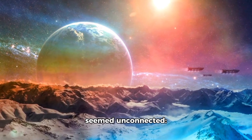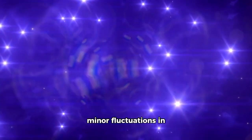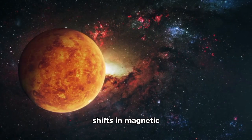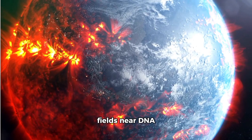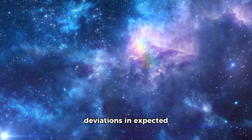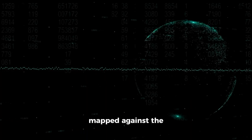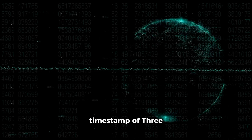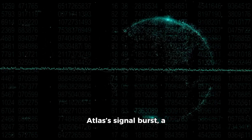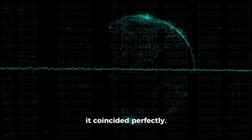Minor fluctuations in protein expression, shifts in magnetic fields near DNA replication chains, and deviations in expected quantum interference patterns. But when the data was mapped against the time stamp of the signal burst, a chilling pattern emerged. It coincided perfectly.